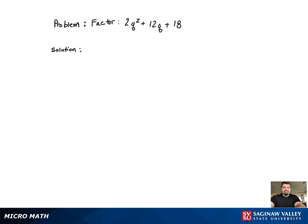First we want to notice that there's a greatest common factor of 2. Each term has a factor of 2 in it. So when we factor that out, the problem becomes much easier.